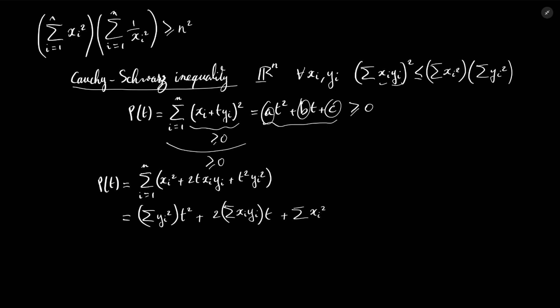By writing p(t) this way, we can identify the coefficients: a = Σyi², b = 2Σxi·yi, and c = Σxi². Now we are going to use the fact that p(t) must be positive to derive a condition on the coefficients a, b, and c.